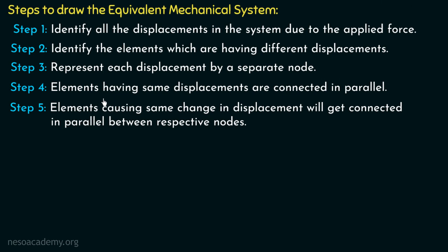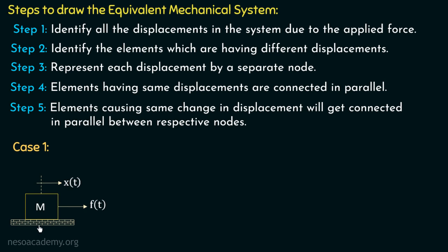We are now done with the steps to draw the equivalent mechanical system. Let us take some cases to understand how we apply these steps. In case number one, we have a mass resting on a fixed surface with a force f(t) applied on the right-hand side, causing a displacement x(t) to the right. Starting with step number one, we identify the applied force f and the displacement x(t).